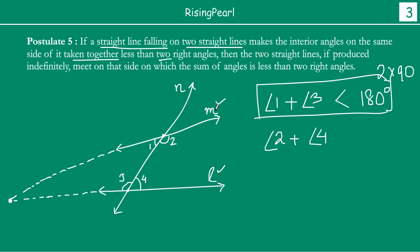That means lines L and M will not intersect on the other side — if you continue to extend them in that direction, these 2 will never intersect — because on that side the sum of these 2 interior angles is less than 180 degrees. So lines L and M will intersect on the side where the sum of interior angles is less than 180 degrees, and they will not meet on the side where the sum of angles is more than 180 degrees.